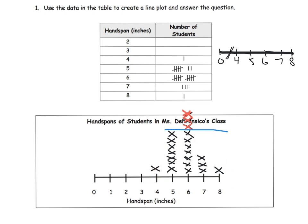Parents and teachers, if you want, you could talk about a bell curve here because that's a beautiful concept. We can also note that the space from zero to three is wasted space, so really this could have been a line plot that started at four using a skip notation.